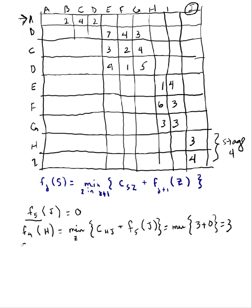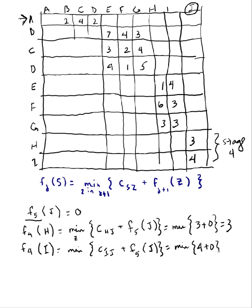That takes care of H. Now computing the optimal cost for the other node in stage 4, which is I: it's the min of the cost from I to J plus the optimal cost at stage 5 to get to node J. That's 4 plus 0, which equals 4.